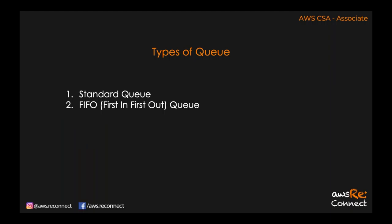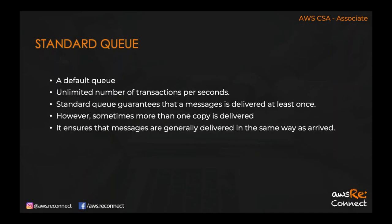There are two types of queues: standard queue and FIFO queue (first in, first out). The default is a standard queue. Standard queue provides unlimited transactions per second with no limitation. Standard queue guarantees that a message is delivered at least once — which means there might be duplication, the same message could be delivered twice, but AWS guarantees delivery at least once.